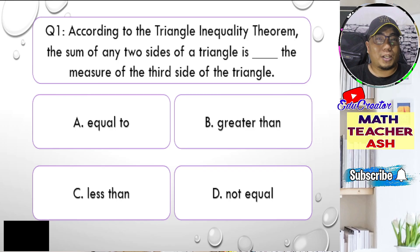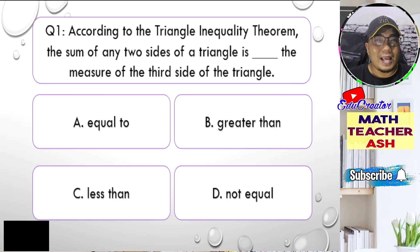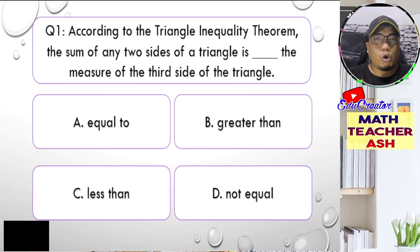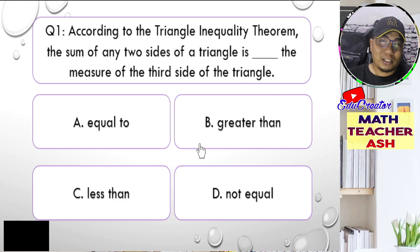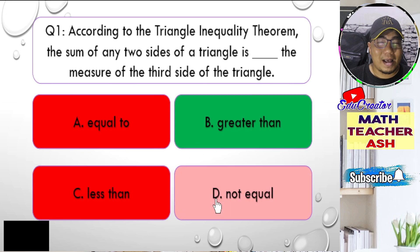This question is very easy because if you can still remember your lesson in the fourth quarter about the triangle inequality theorem, the sum of two sides of a triangle, regardless of what sides you are considering — whether the first and second, second and third, or third and first — it will always be greater than the third side. So the answer is letter B, greater than.